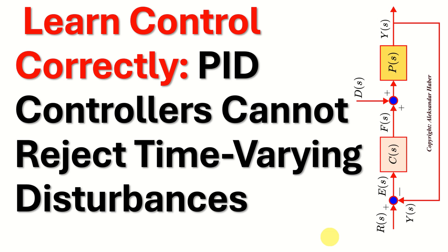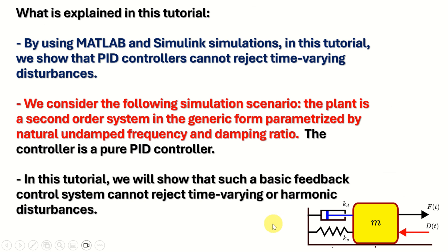Hello everyone and welcome to control engineering tutorials. Using MATLAB and Simulink simulations, in this tutorial we show that PID controllers cannot reject time-varying disturbances. As a test case we consider the following simulation scenario. The plant is a second-order system in generic form, parameterized by natural frequency, damped frequency, and damping ratio. The controller is a pure PID controller, and we will show that such a basic feedback control system cannot reject time-varying or harmonic disturbances.